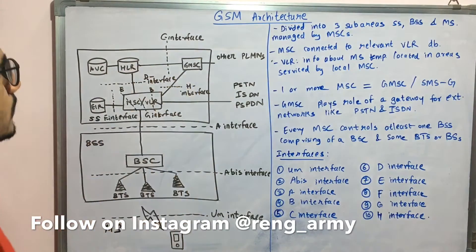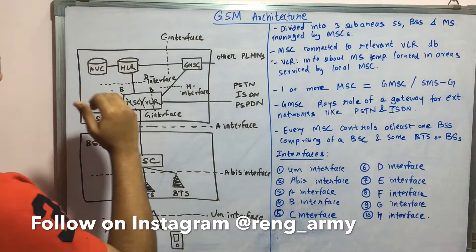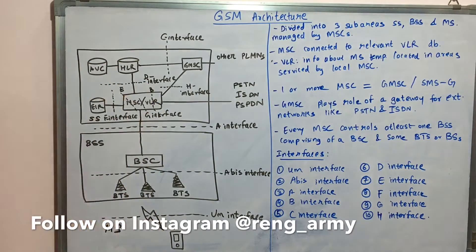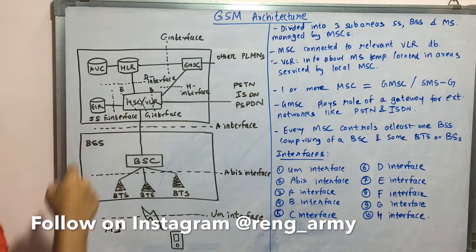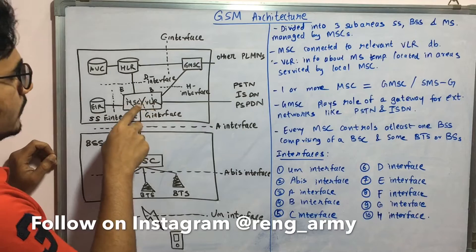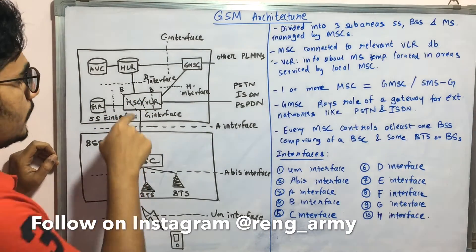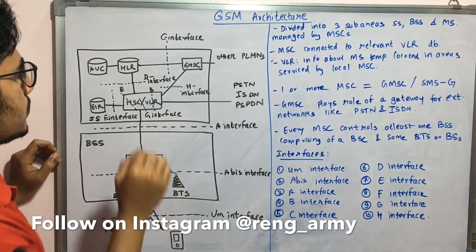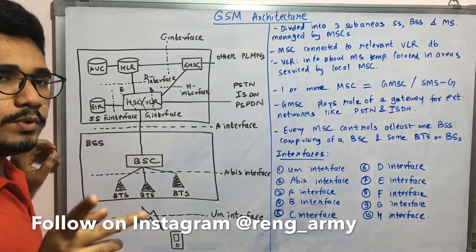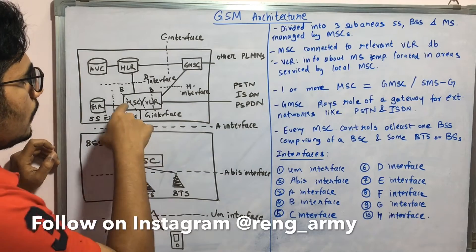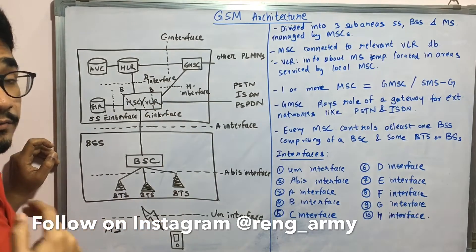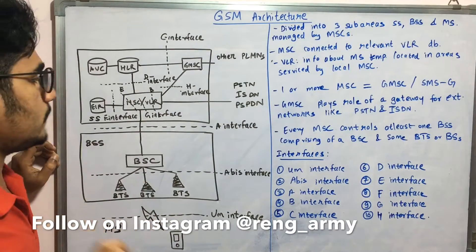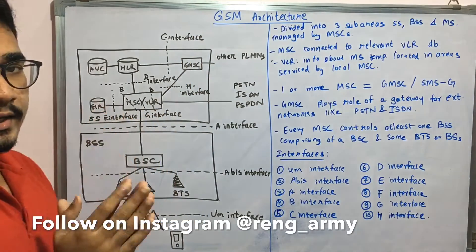Between the VLR and the GMSE you have the H interface. The interface between the HLR and the MSC/VLR is the D interface. The interface connecting the EIR and the MSC is the F interface. Between the MSC and the VLR you have the G interface. Between two MSCs — which can exist for two different cell structures — you have the E interface. Between two VLRs you have the B interface. That covers the Switching System.